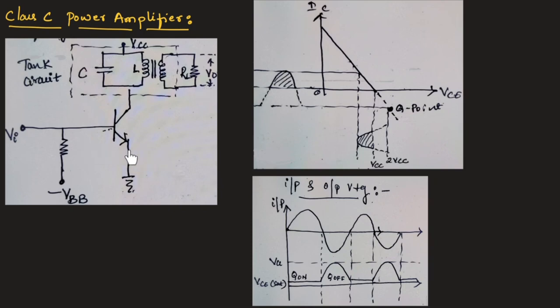You need to remember that in a class C power amplifier, the transistor is on for less than half of the cycle, which is less than 180 degrees of the input signal which is applied.